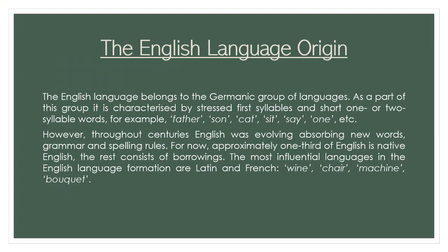The English language origin. First of all, we should know that English belongs to the Germanic group of languages. As a part of this group, it is characterized by polysemy — a phenomenon of existing multiple meanings for one lexical unit, for example verbs set, be, bear; short one- or two-syllable words, for example son, cat, seat; and stressed first syllables, for example in the words mother, father.